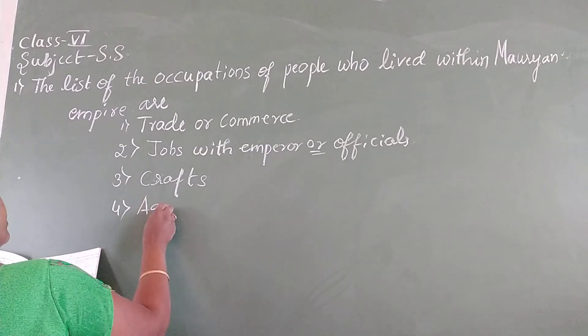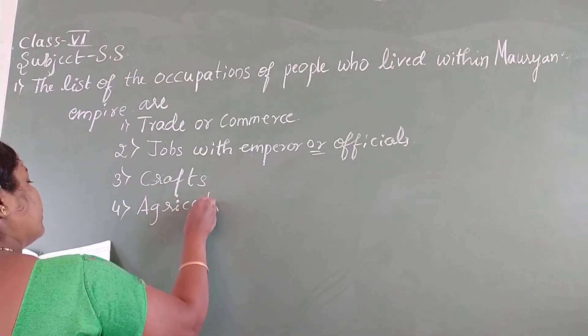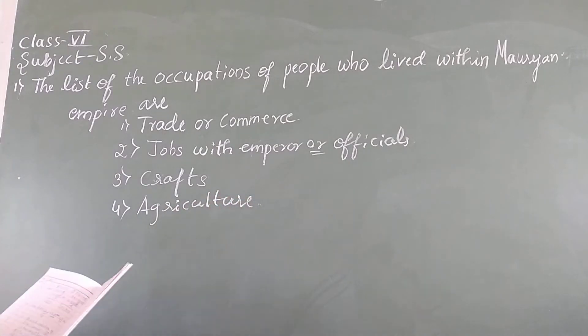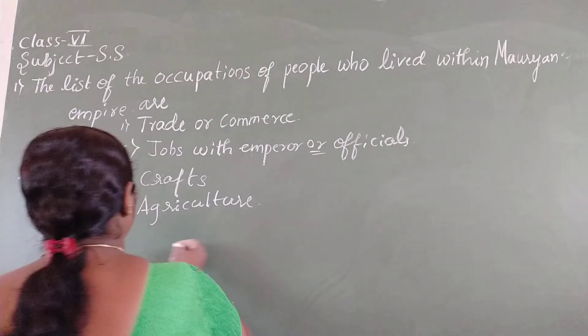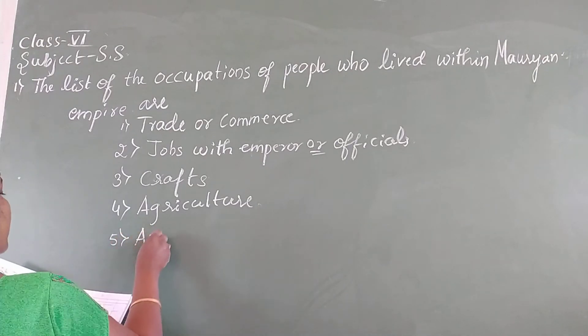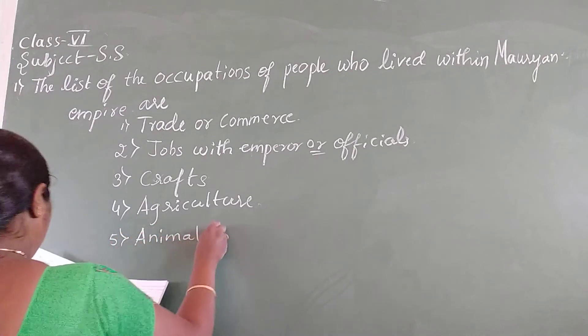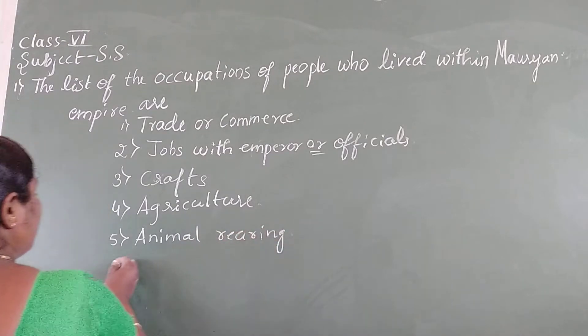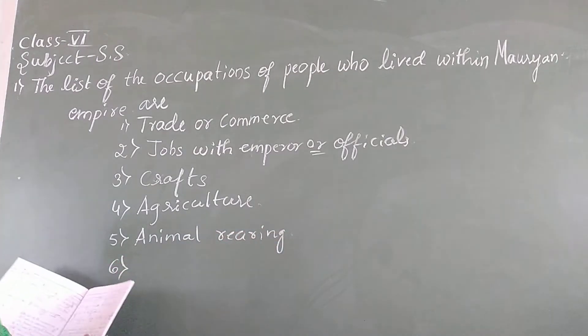Fourth one, agriculture. There were some farmers who had the occupation of agriculture. Then animal rearing. Fifth one, animal rearing. It means taking care of animals for the products of milk, meat and all.